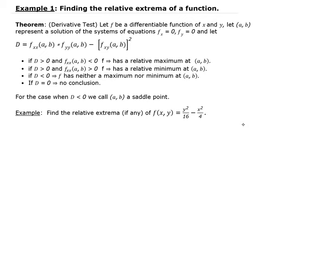We also have to look at the partial of f squared with respect to x squared. So first let's find the partial of f with respect to x — we treat y as a constant and x as the variable — so that gives us negative one-half x. And for the partial of f with respect to y, we treat x as a constant and y as the variable, so that gives us one-eighth y.